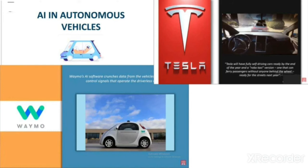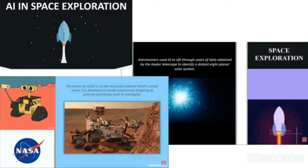AI in autonomous vehicles: Waymo is an AI software that crunches data from vehicles and controls signals without a driver. Tesla is another example — it is a driverless car. AI in space exploration: astronomers used AI to sift through years of data obtained by the Kepler telescope to identify a distant 8-planet solar system.